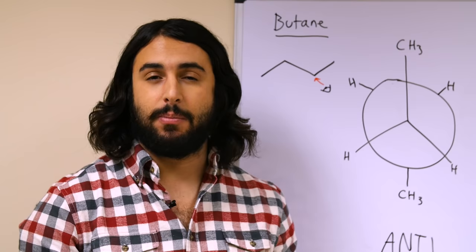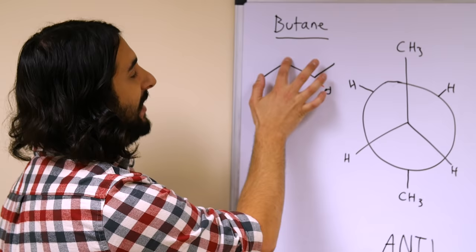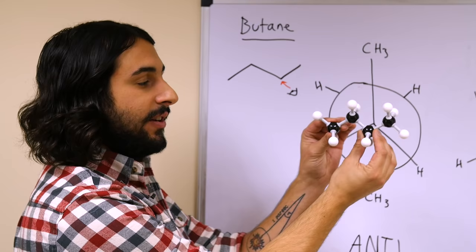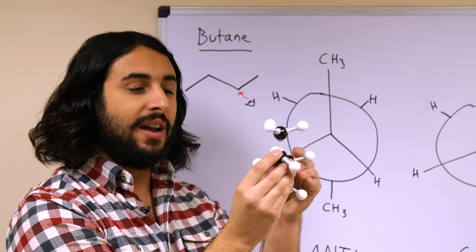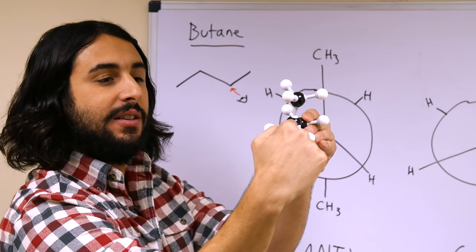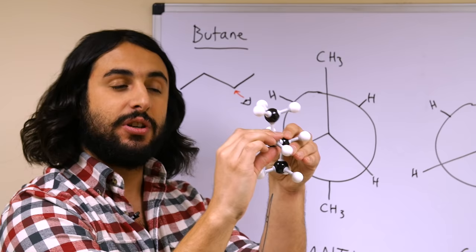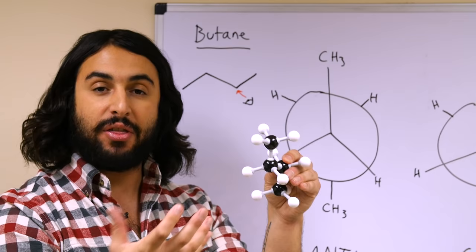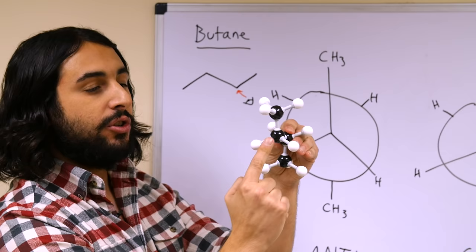Let's take a look at a slightly more complicated molecule — butane, C4. Here are the four carbons. We're going to look directly down the C2-C3 bond, the central bond. That's how we would look at it in line notation, and now we're going to look directly down the C2-C3 bond through these middle two carbons. It's really the same as ethane — it's just that if we took ethane and replaced one of the hydrogens on each carbon with a methyl group, we'd get butane. Here we can see butane in a staggered conformation.